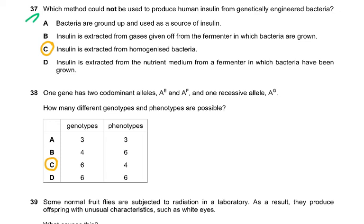Question 37: which method could not be used to produce human insulin from genetically engineered bacteria? This is a question which was challenged, a very challenging question. Homogenized bacteria, insulin is extracted from homogenized bacteria, that was the wrong answer. Because if you homogenized it, you would break up the insulin also into tiny pieces, so the insulin would not be intact.